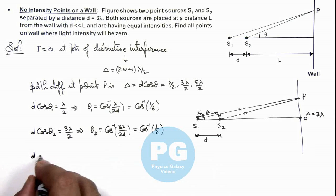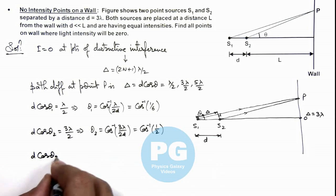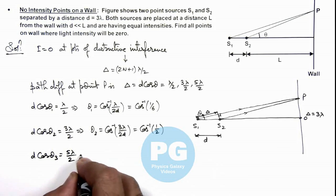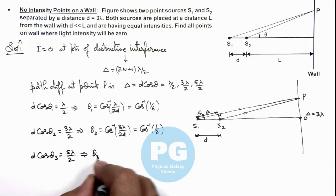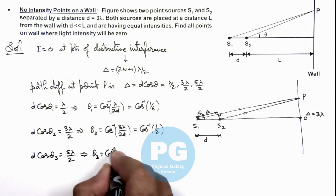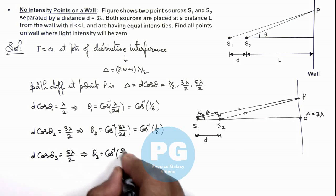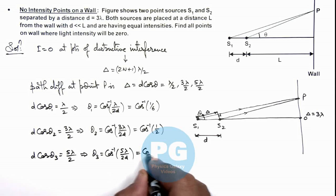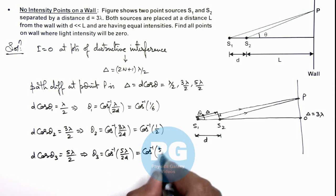Another one is d cos θ₃ equals 5λ/2. This implies the value of θ₃ we are having is cos inverse of 5λ/(2d), and if we substitute d as 3λ, this will be cos inverse of 5/6.